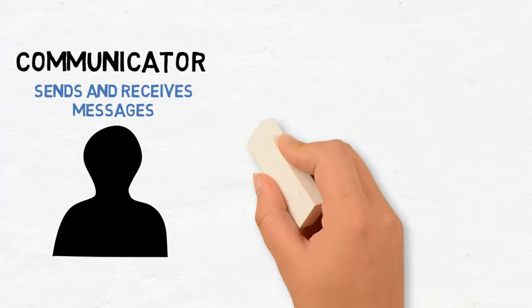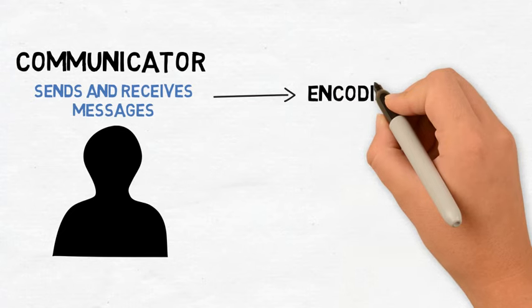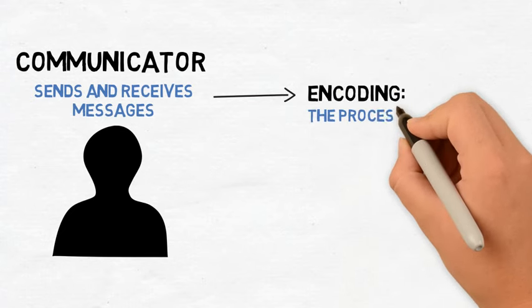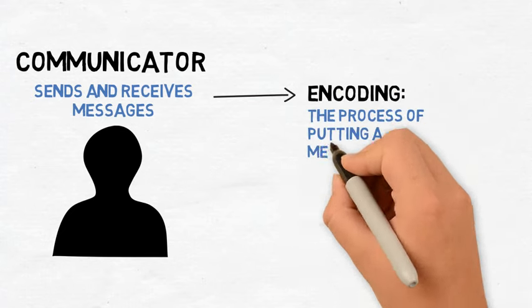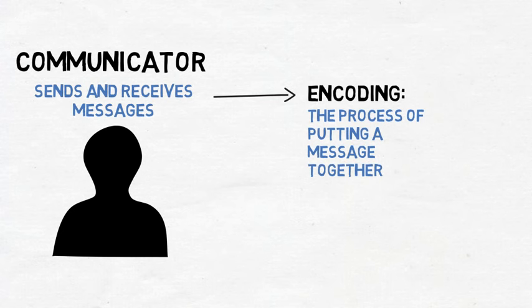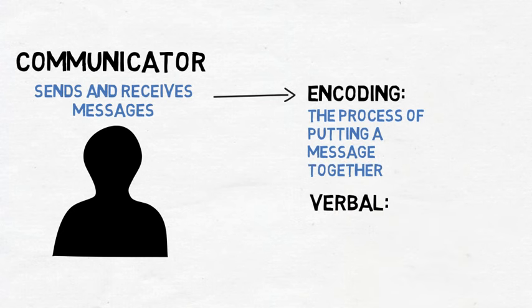Before a communicator can send a message to another person, the message must first be encoded. Encoding is the process of putting a message together. When it comes to using language, or rather verbal communication, the encoding process is fairly easy to perceive.